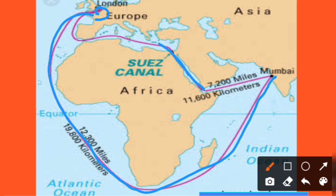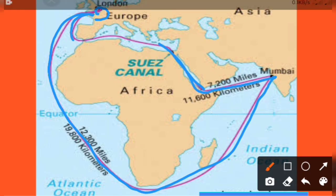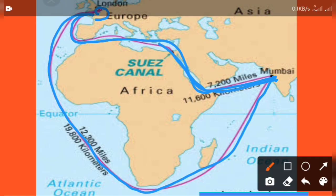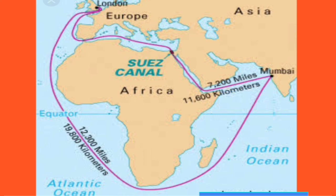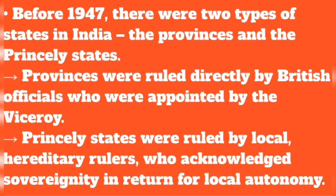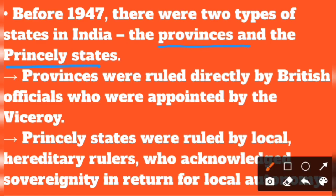The Suez Canal reduced the distance between India and Europe by around 7,000 km, making it very useful for trade. Before 1947, under British rule, India was going to become independent, and the country was divided into two types of administrative units: provinces and princely states.